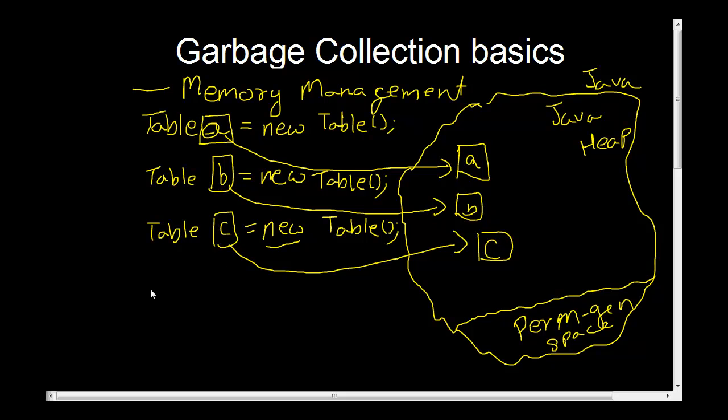So this is the reference to some object in the memory, to this object called C. Now, all good. You created a new table A. Java created a reference, which is this instance name. And that reference points to the physical real object location in Java's heap. And that is this thing called A. And so for B, and so for C.